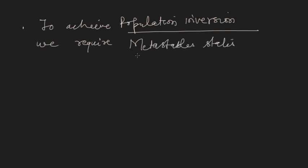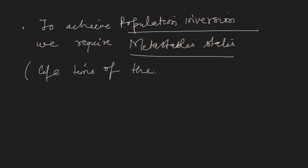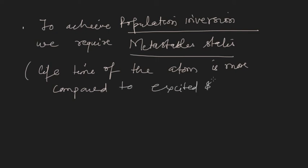So we require some additional thing — metastable states. Metastable states are those states where the lifetime of the atoms is more compared to the normal excited state. The lifetime of the atoms in a metastable state is typically of the order of 10 to the power minus 3 seconds. This is the third requirement in order to achieve population inversion. If metastable states are present, then it is easy to achieve population inversion.